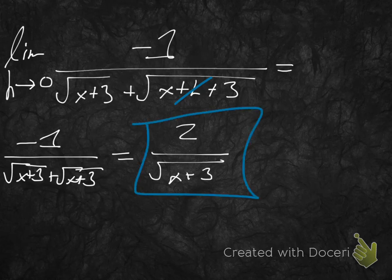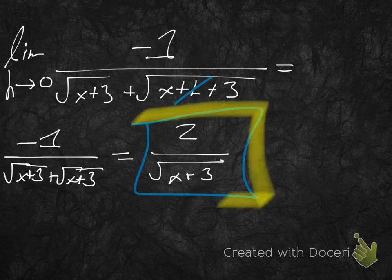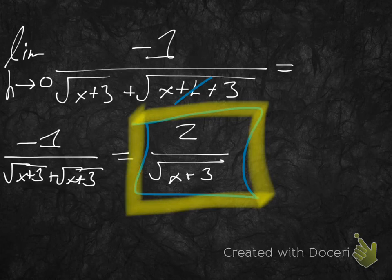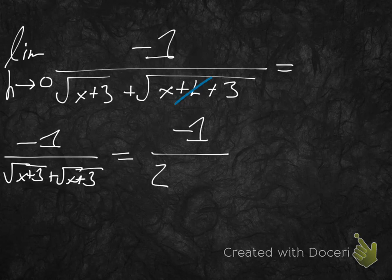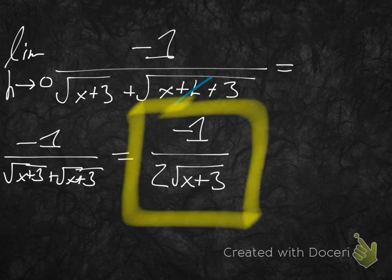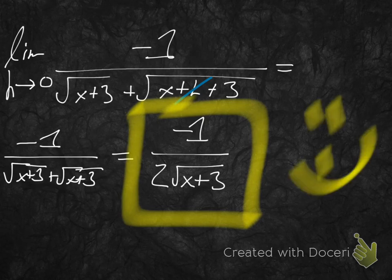Ta-da! We're done — this is our final answer. Wait — I wrote the wrong thing because I was rushing. The 2 was in the wrong spot. The correct final answer is negative 1 over 2 times radical x plus 3.